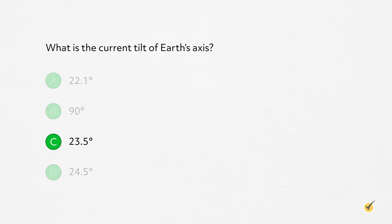The correct answer is C: 23.5 degrees. The axial tilt will cycle between 22.1 degrees and 24.5 degrees over a 40,000-year period.